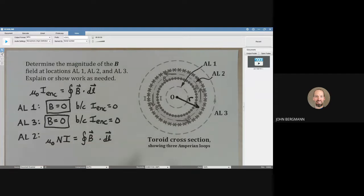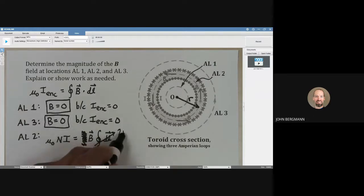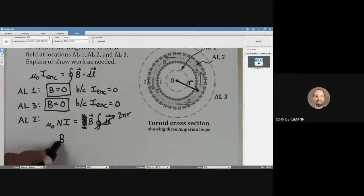Because of symmetry at any value of R within there the magnetic field is going to be constant so essentially I can take that integral and I can put it right there and when we integrate DL we're just going around the circle so that's 2 pi r the magnetic field is going to be mu naught n I divided by 2 pi r.